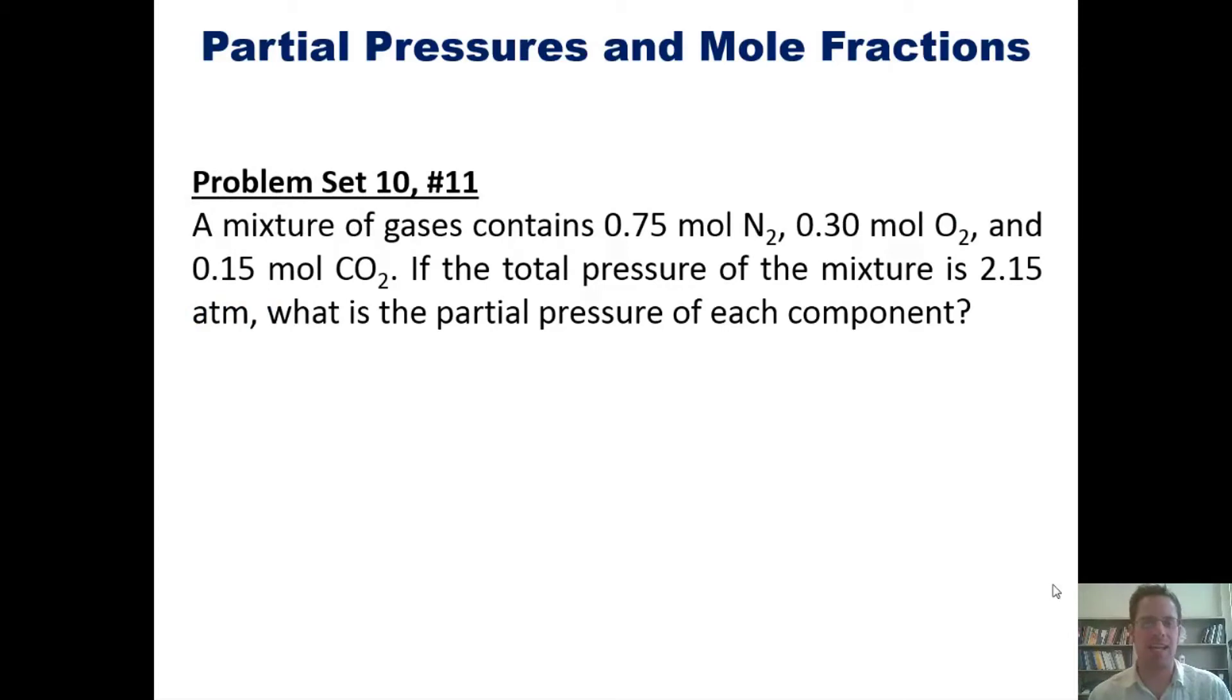A mixture of gases contains 0.75 moles of nitrogen, 0.30 moles of O2, and 0.15 moles of CO2. If the total pressure of the mixture is 2.15 atmospheres, then what is the partial pressure of each component? I invite you to pause the video now and attempt this on your own. You can then hit play and watch me do it for you.